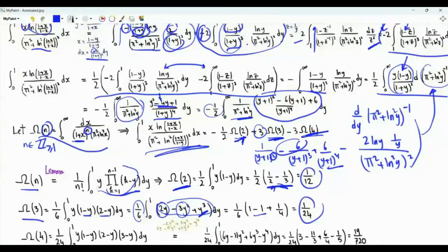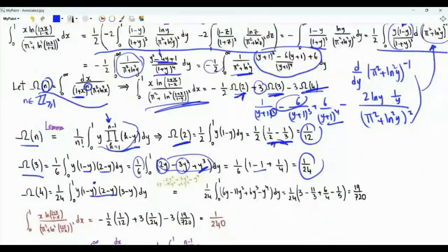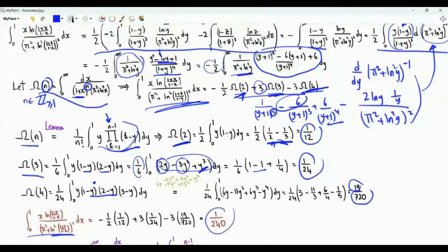Finally, omega(4) has an integral representation where the product has three terms: (1 minus y), (2 minus y), and (3 minus y). Multiplying gives a quartic polynomial integrand. Integrating term by term gives the value 19/720. Plugging in the values of omega(2), omega(3), and omega(4), we get that our integral of interest is 1/240.